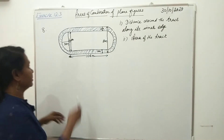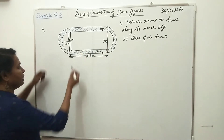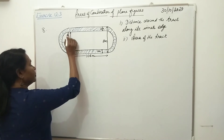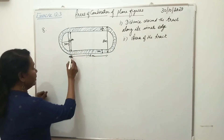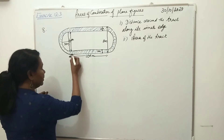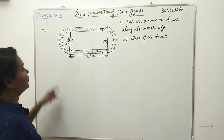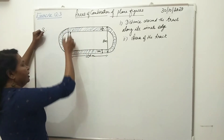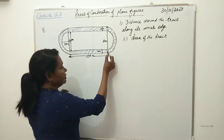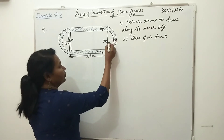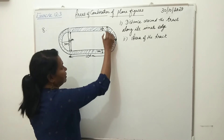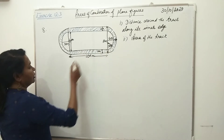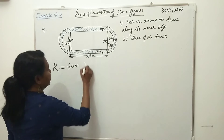In the second part, the area of the track — the blue color portion. The area of the track equals the outer rectangle minus the inner rectangle, plus the semicircular parts. Two semicircles form a full circle. The outer diameter is 80 meters, so the outer radius R is 40 meters. The inner radius r is 30 meters.